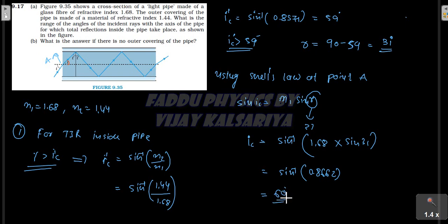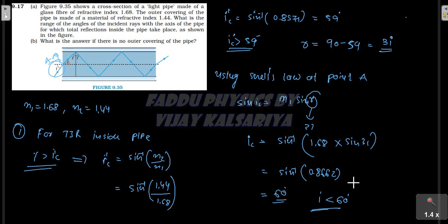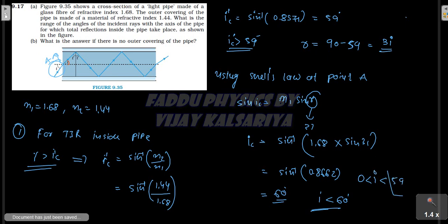Simplifying, the value of i comes out to be 60 degrees. From here you can see that the value of i should be less than 60 degrees. So the answer to the first part is: the range of angles of incidence should be less than 60 degrees, i.e., i less than 60 degrees.